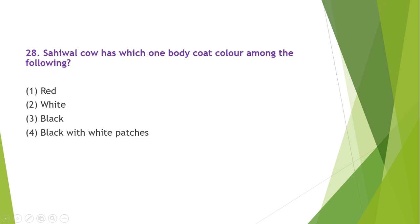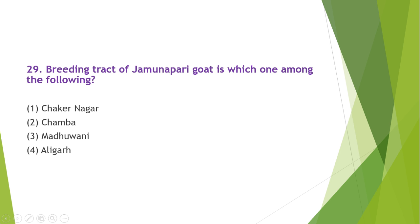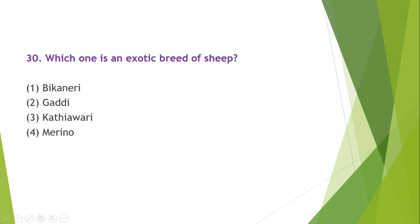The Sahiwal cow has red body coat color. The breeding tract of Jamunapuri goat is Chakarnagar. The exotic breed of sheep among the following is Merino.